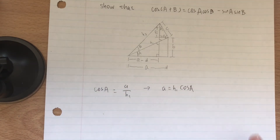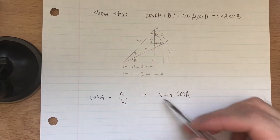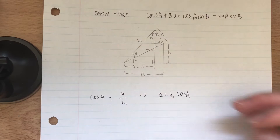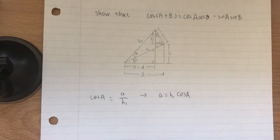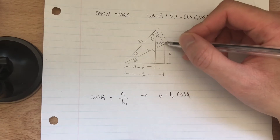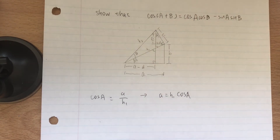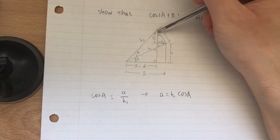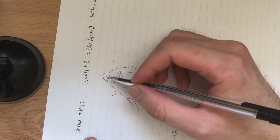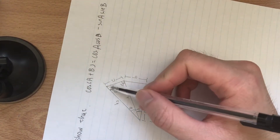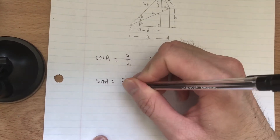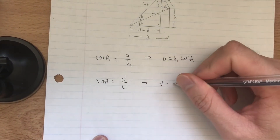The ultimate goal is to find the length a minus D, since we're calculating cosine(A+B) and we need that side. We have 'a', now we need to figure out D. D is the opposite side in this right triangle with angle A, so sine A equals D over C. We can write this as: D equals C sine A.